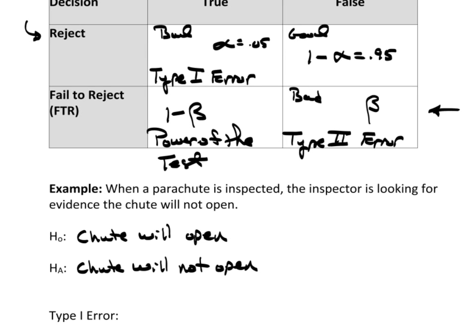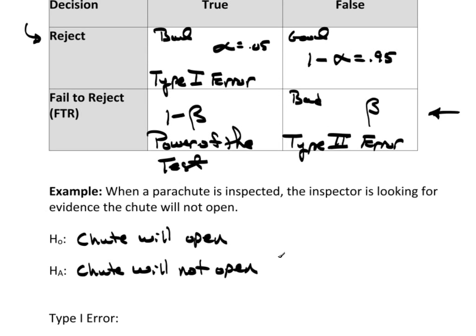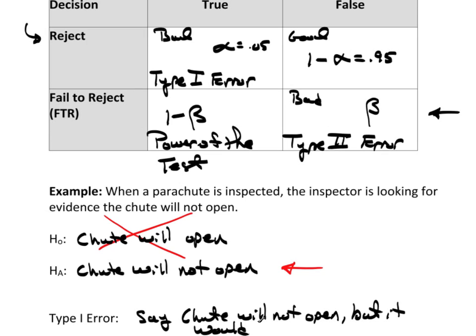Okay, so, what would a type 1 error be? A type 1 error would be rejecting. And when we reject, what we're really saying is we think this is false, leaving this as being more likely. So, here a type 1 error would be to say the chute will not open, but it would have. That would be my type 1 error. So, the null hypothesis is true, but we rejected it.